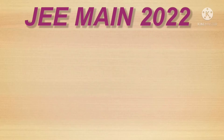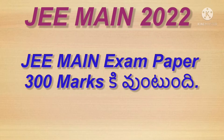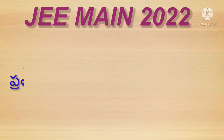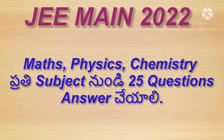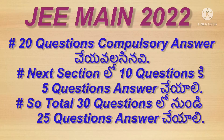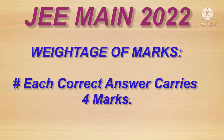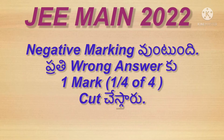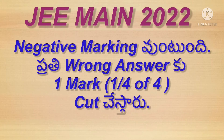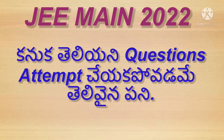JEE Mains 2022 exam paper is for 300 marks. Physics, Chemistry, and Mathematics each have 25 questions, of which 20 are compulsory and 5 questions are given a choice — attempt any 5 out of 10. Each subject covers 100 marks. For every correct answer, 4 marks are awarded. Very importantly, for every wrong answer, 1/4th mark — that is 1 mark out of 4 — will be deducted. There is negative marking, so be careful while attempting unknown questions.